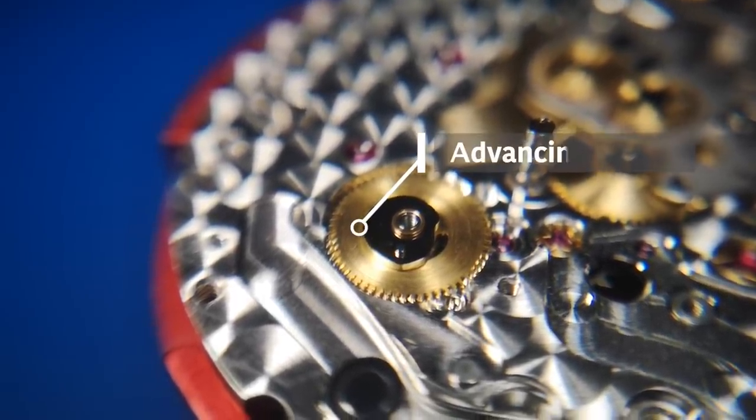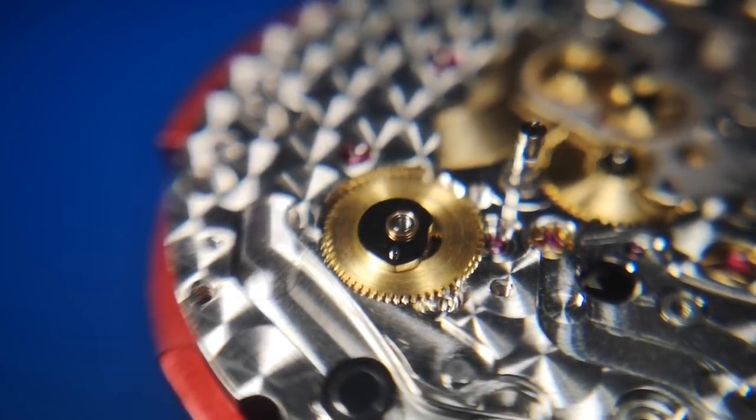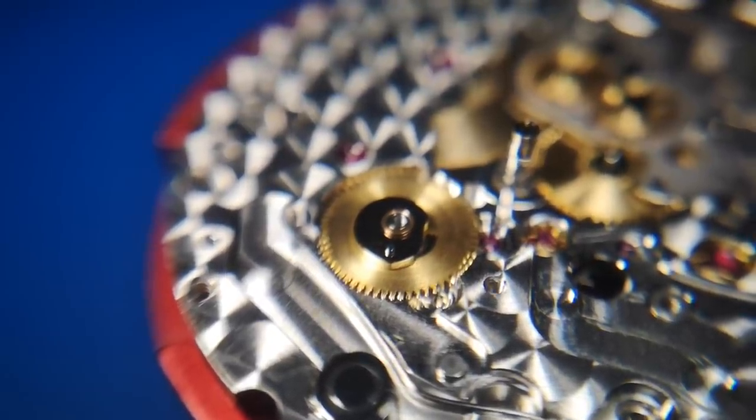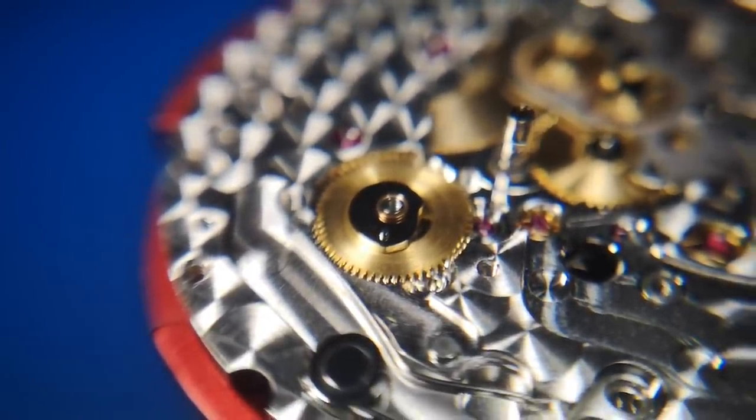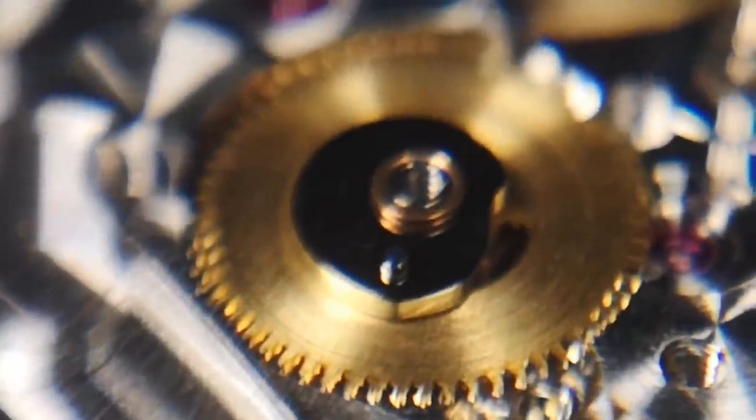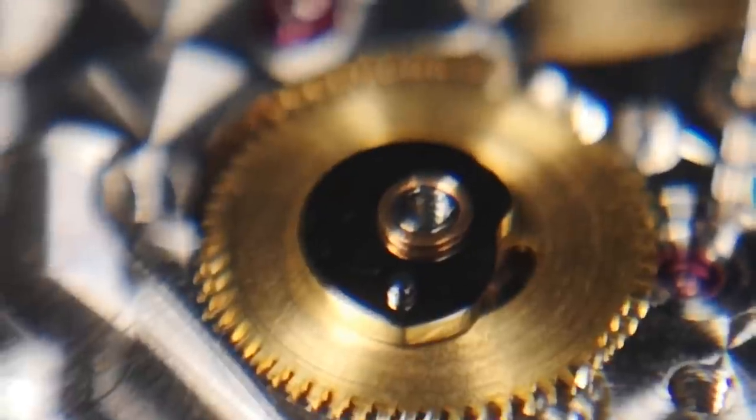There then in the center of the frame is the advancing wheel with the odd shaped bit of metal, the steel on top of it there, which is the cam. And the tiny little jewel is pressed up against that under tension, under quite a lot of tension as well.